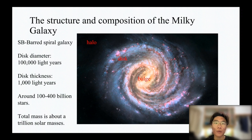There are somewhere between 100 and 400 billion stars in our galaxy, and the total mass is about a trillion solar masses.